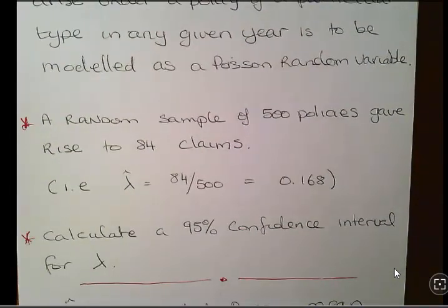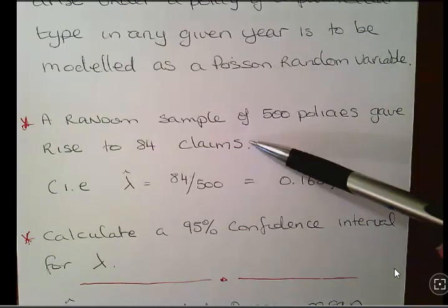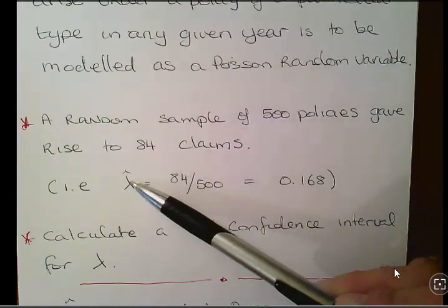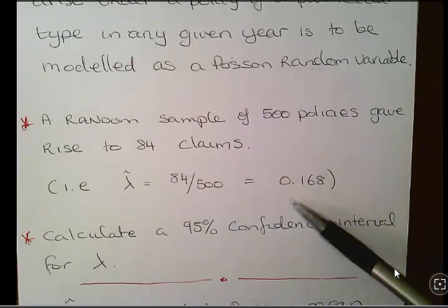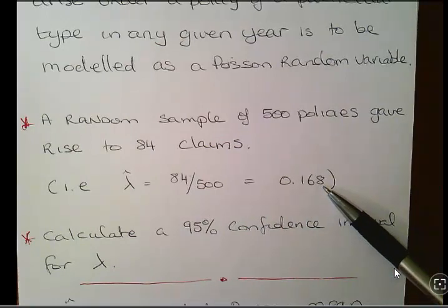A random sample of 500 policies gave rise to 84 claims. So our estimate for the Poisson mean is 84 over 500 which is 0.168.